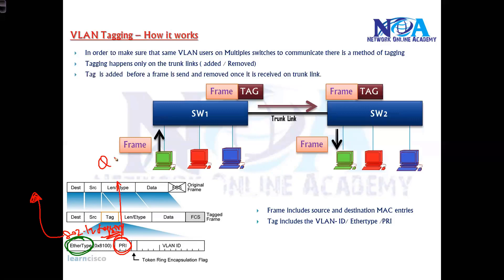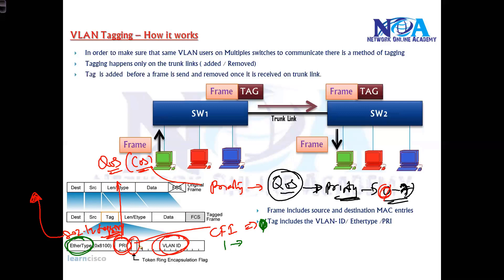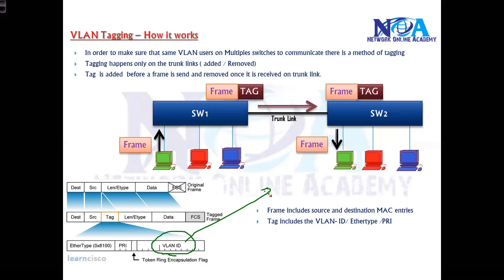There is also a priority bit, used in quality of service — also called class of service. This defines the priority for your traffic. In QoS concepts, we can assign priority for specific traffic using these bits. The value ranges from 0 to 7, where 7 is the highest priority and 0 is normal or lowest priority. There is also a CFI (Canonical Format Identifier) field, which is always 0 for Ethernet switches — it would be 1 for token ring networks — so that field doesn't make any practical difference here. The main field is the VLAN ID.